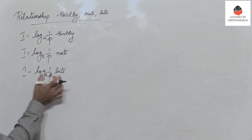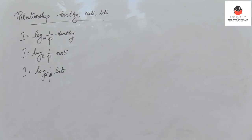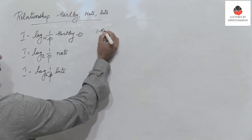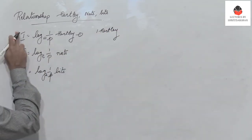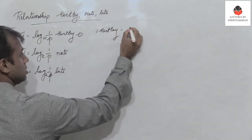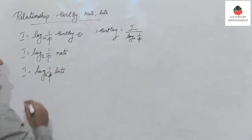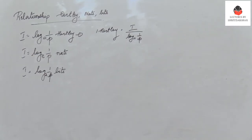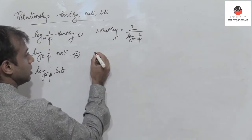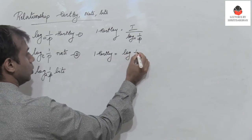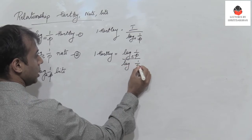In most cases we consider log(1/P) to base 2 because we want information in bits. Now, how do we find the relation between Hartley, Nats, and bits? One Hartley is I divided by log to base 10 of (1/P) — this is from the first equation. We also know that I is log(1/P), so substituting: 1 Hartley equals log(1/P) to base e divided by log(1/P) to base 10.